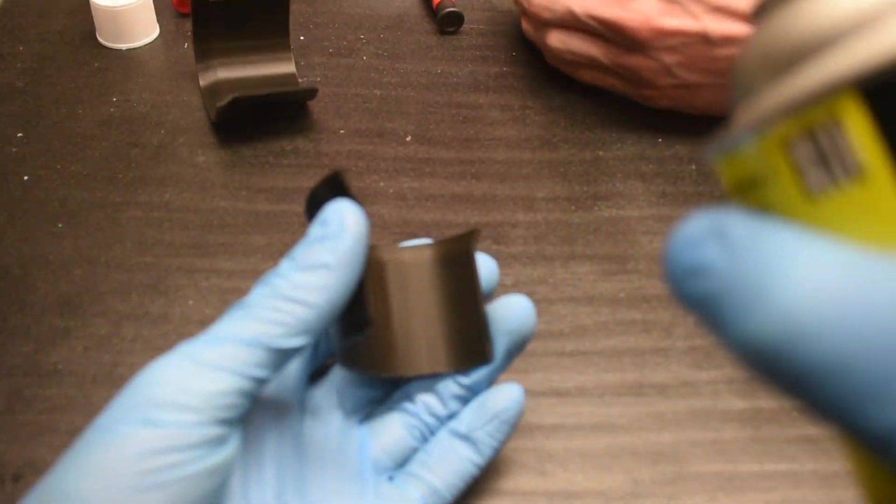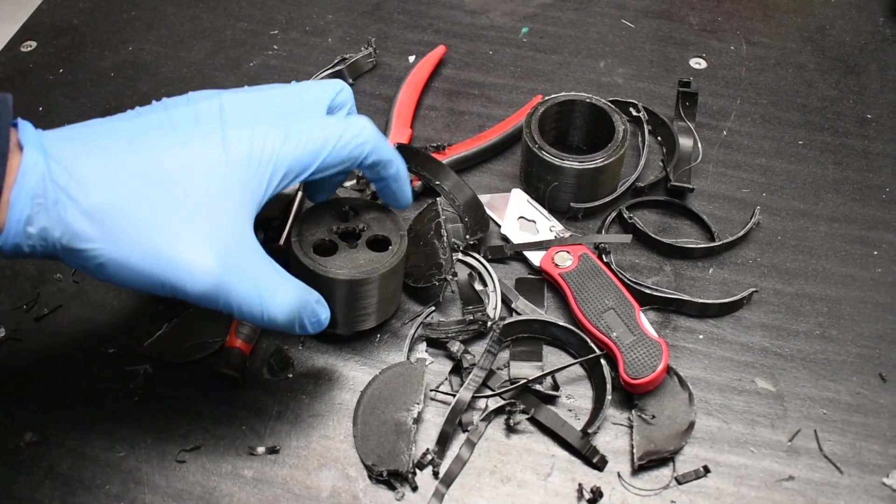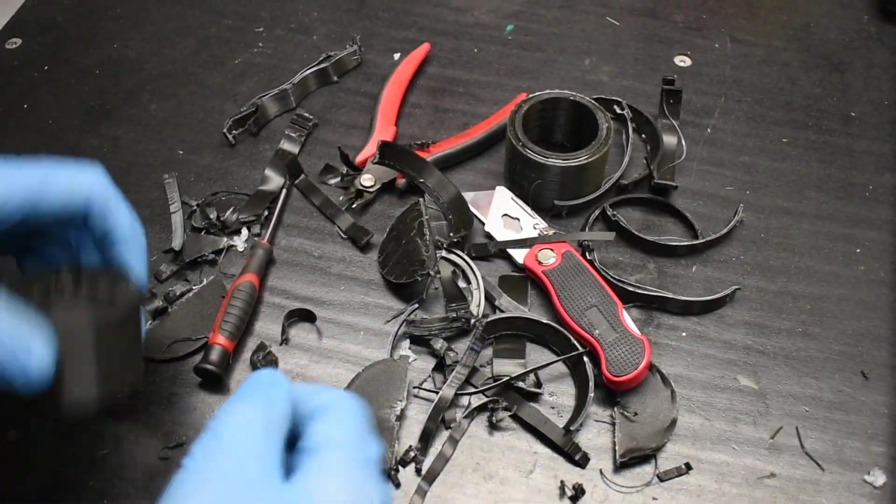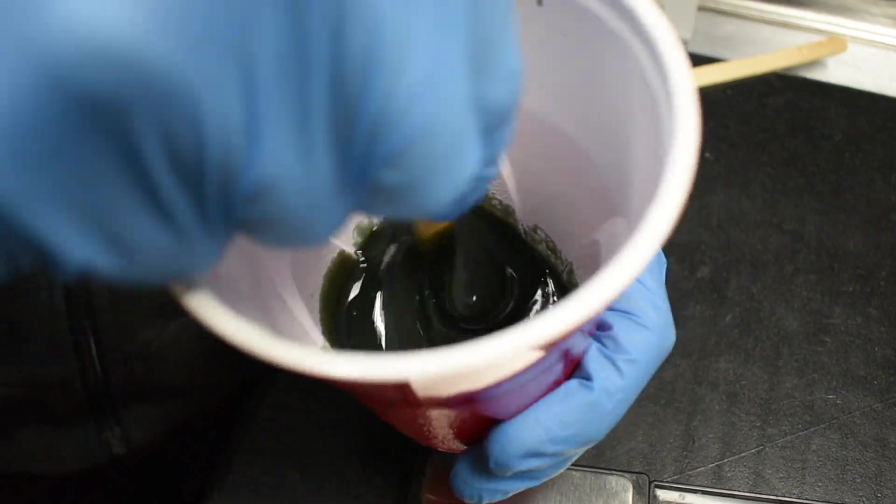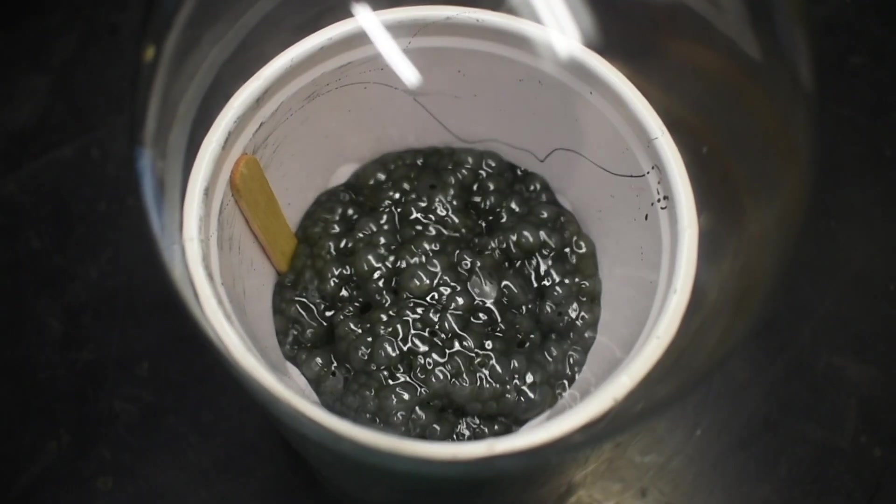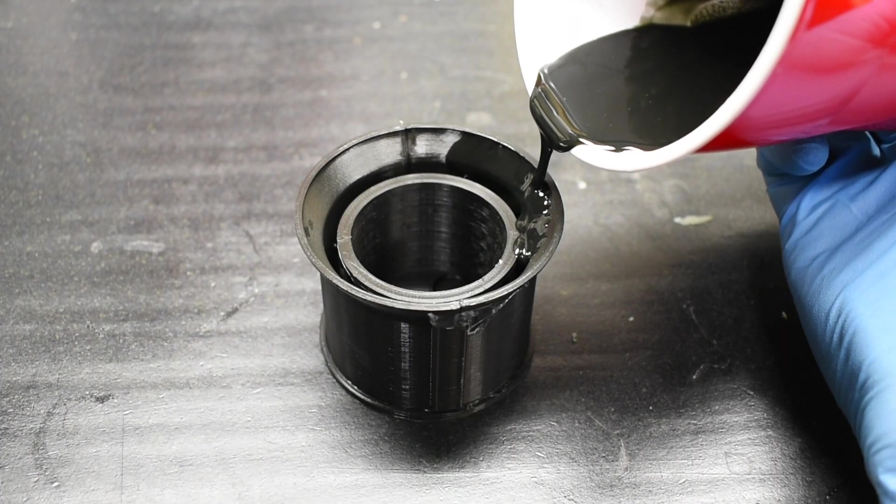Also, don't forget to use mold release. It is not fun without it. I cast them using this urethane rubber that Smooth-On sells. This stuff has been surprisingly durable, and it gives tons of traction.